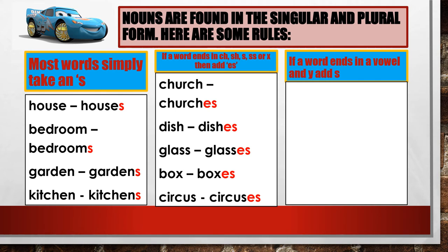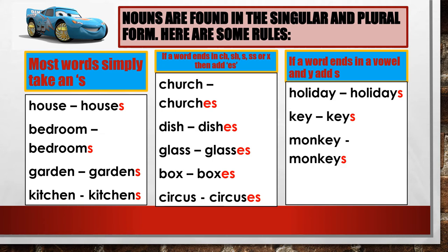If a word ends in a vowel and Y, add S. Examples: one holiday, many holidays. One key, many keys. One monkey, many monkeys. One guy, many guys.